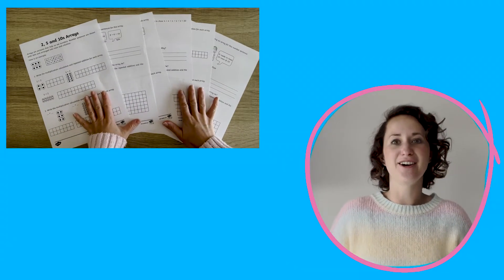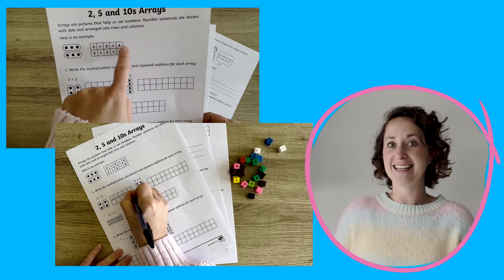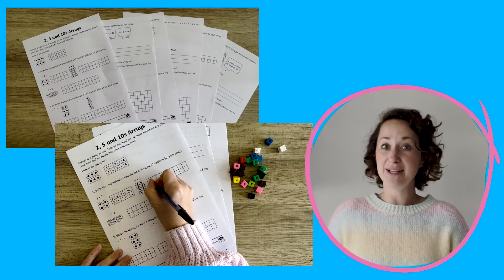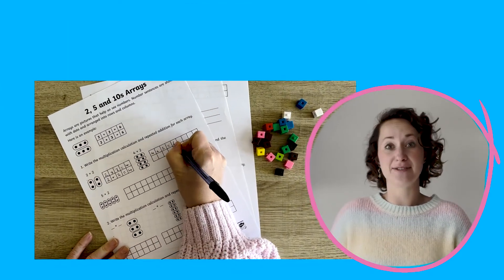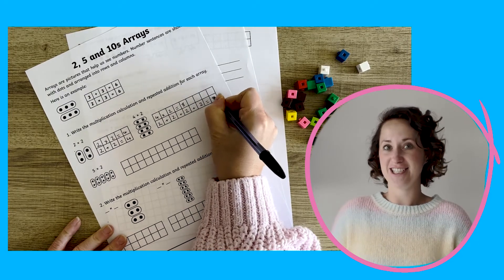Children will use their knowledge of 2, 5 and 10 multiplication tables to complete a range of calculations using arrays to help them. They will understand that these can be used for repeated addition or multiplication, combining the two strategies.